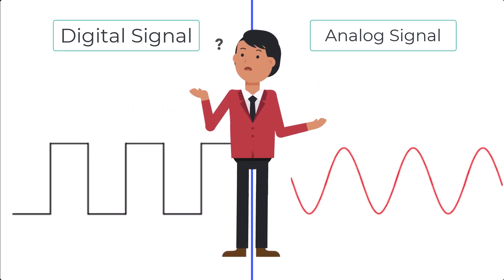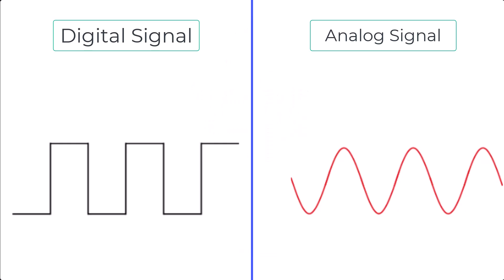Why might we choose a digital signal over an analog one? Precision.